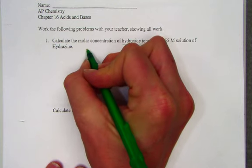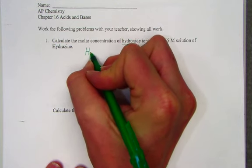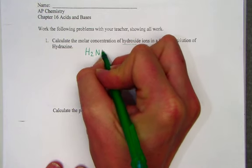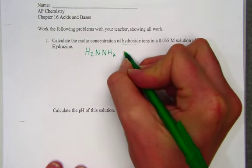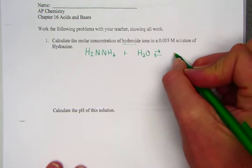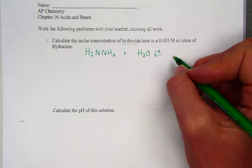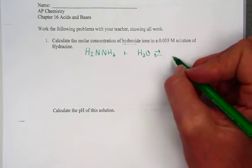Hydrazine can be found on your KB chart using your Appendix D. Its formula, written as H2NNH2, being placed into water, setting up an equilibrium that generates base ions and the protonated conjugate of the original hydrazine.